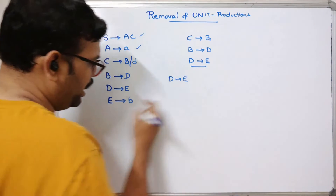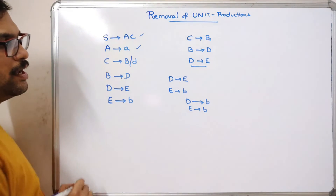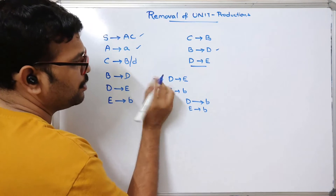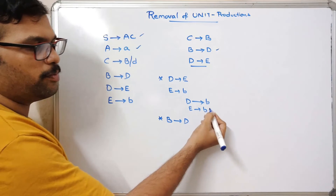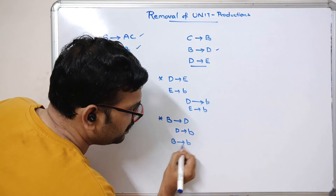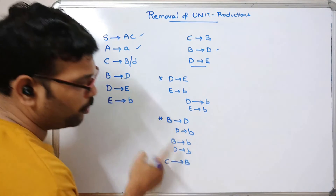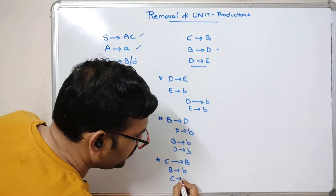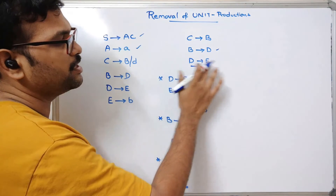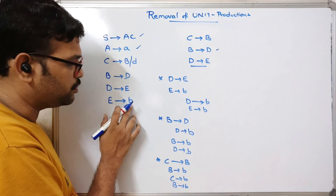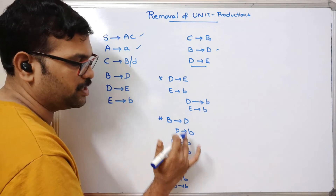We need to remove these three unit productions. Consider D→E: we know E→b, so we can assign D→b and E→b. Next, for B→D: from the above, D→b, so we can write B→b and D→b. For C→B: from above, B→b, so we can write C→b and B→b. We are assigning the same terminal value to both non-terminals in each case.